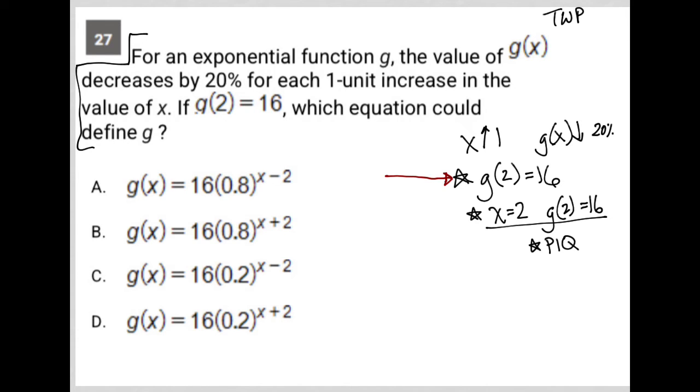What's different about choices A and C? Well, choice A has a 0.8 here. Choice C has 0.2 here. Where is this coming from?